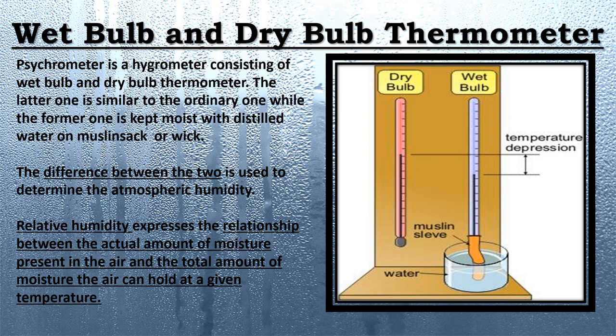As you can look at the picture, there are two thermometers. One is the dry bulb thermometer, which is similar to the ordinary thermometer, and the other one is the wet bulb thermometer, which is kept moist with the help of water and wick — wick means cotton. The difference between these two thermometers, the dry bulb and the wet bulb, is called temperature depression. As you can see on the screen, temperature depression is marked, and it is used to determine the atmospheric humidity.